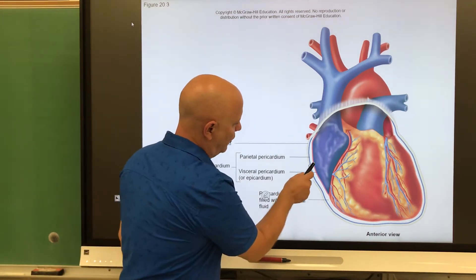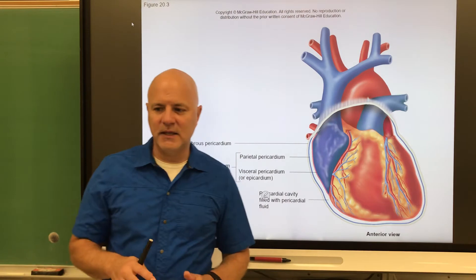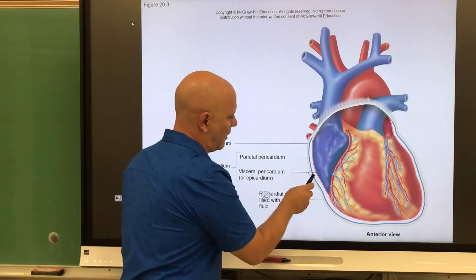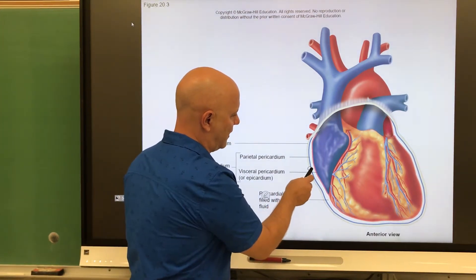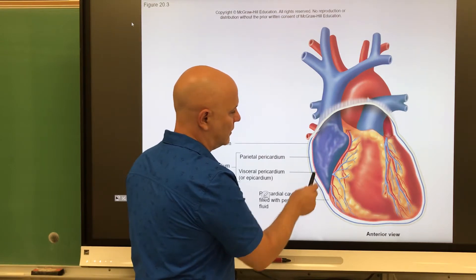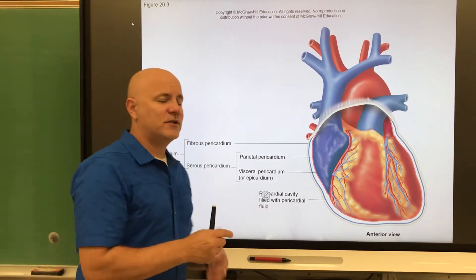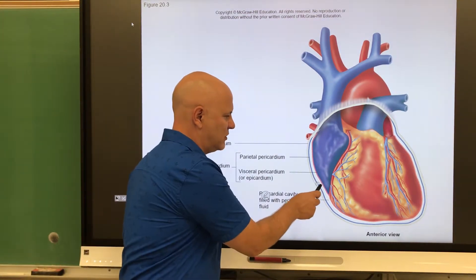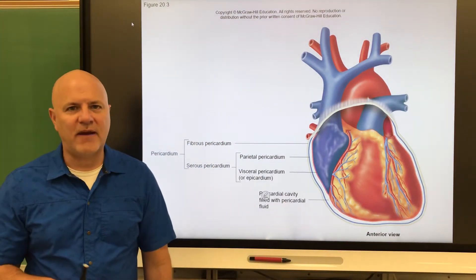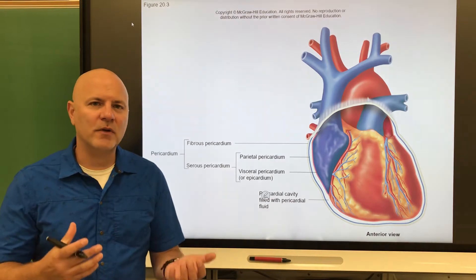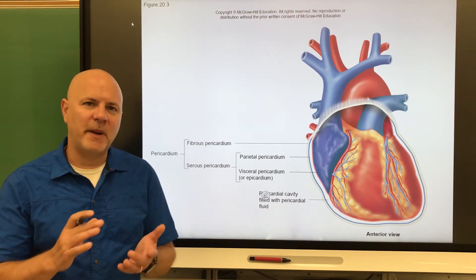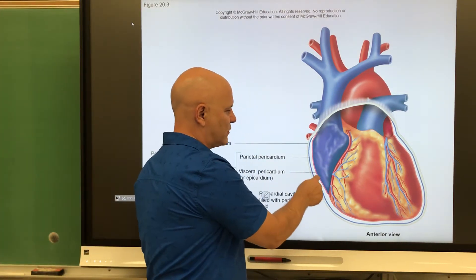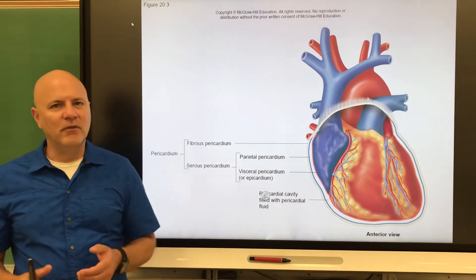Inside the fibrous pericardium is the serous pericardium, which has two layers: the parietal pericardium, which lies on the fibrous pericardium, and the visceral pericardium, which is on the heart itself. These two membranes are continuous with each other — they double back — creating a space known as the pericardial cavity, which contains serous fluid. That serous fluid acts as a lubricant, reducing friction as the heart beats.